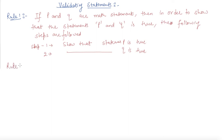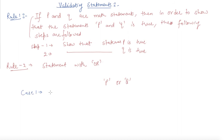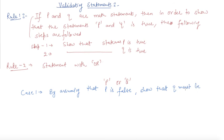Rule number two: statement with OR. If P and Q are mathematical statements, and in order to show that P or Q, we need to take two cases. Case one: by assuming that P is false, show that Q must be true.